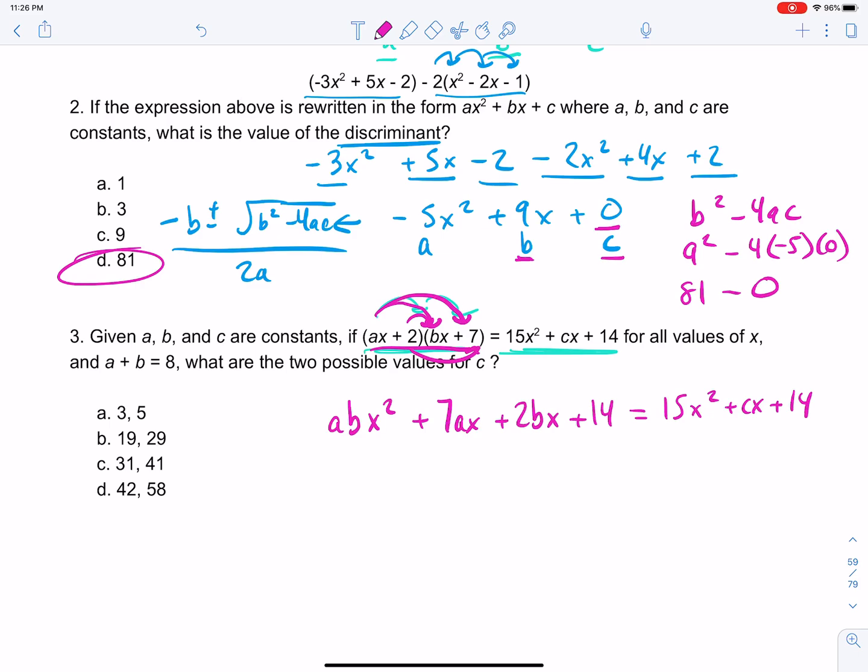Now this equals 15x² + cx + 14. Now, the question is telling us that a + b is 8, and what are the two possible values for c? So first of all, we can cross out the 14s from both sides.